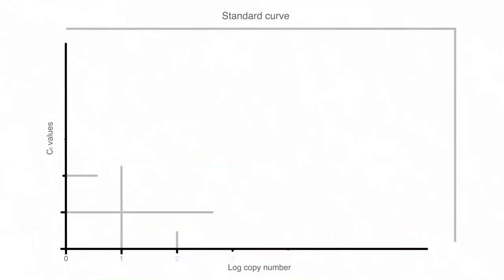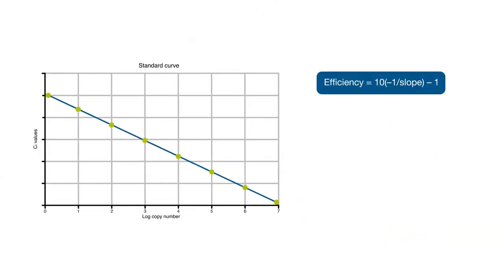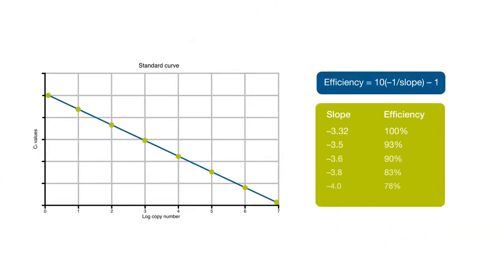The last step to ensure that your primer set yields usable, reproducible data is to make sure PCR efficiency is within the 90 to 110% range. You can do this by simply running a standard curve with at least five logs of input DNA and using the instrument software to calculate the PCR efficiency.